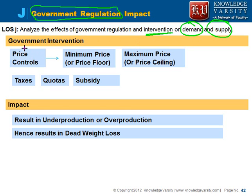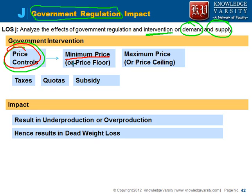What are the government interventions? Government intervention takes place in the form of price control. The government will impose certain price controls, like a minimum price. For example, there will be a minimum salary to be given to labor, or a minimum price for wheat or maize given to the farmer. This minimum price is known as the price floor.